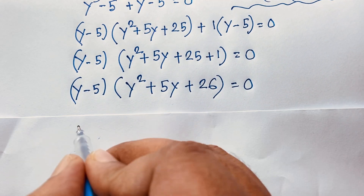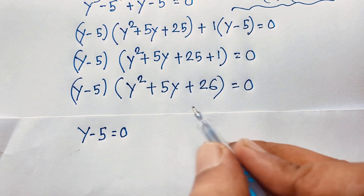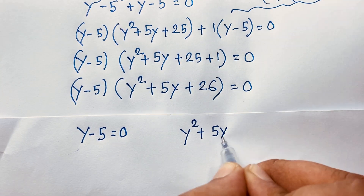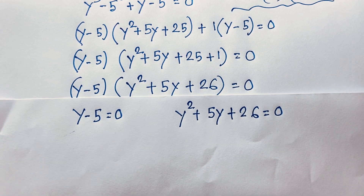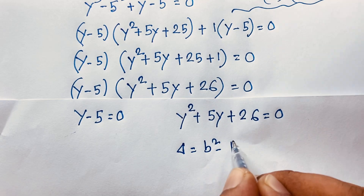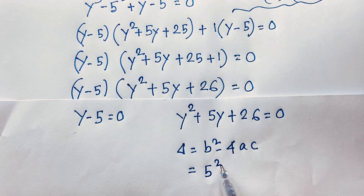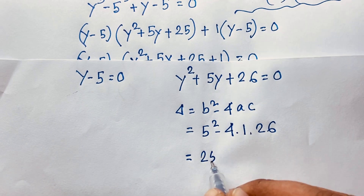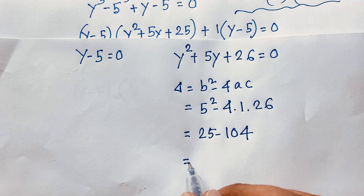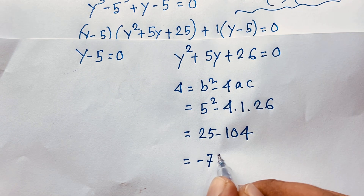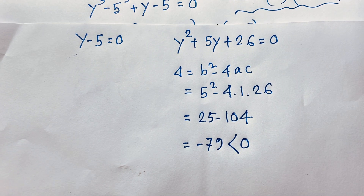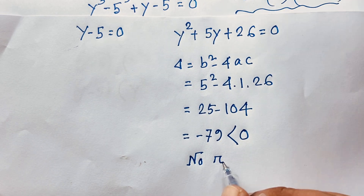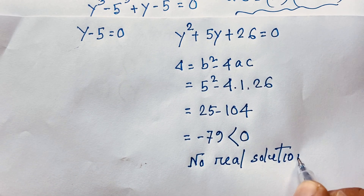We have two cases. Case one: y − 5 = 0. Case two: the quadratic y² + 5y + 26 = 0. For the quadratic, the discriminant is b² − 4ac = 5² − 4(1)(26) = 25 − 104 = −79, which is less than zero. This gives complex roots — no real solution — so we discard this case.